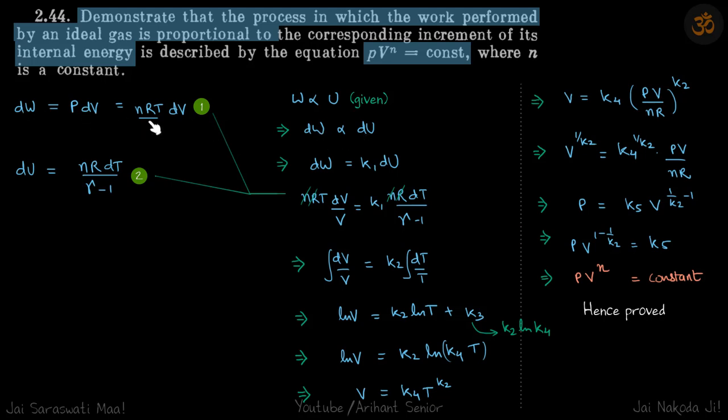So DW is PDV equals NRT by V DV. Why are we writing in terms of NRT DV by V? Because we have to equate that to internal energy, and internal energy is a function of temperature, so we must introduce temperature.